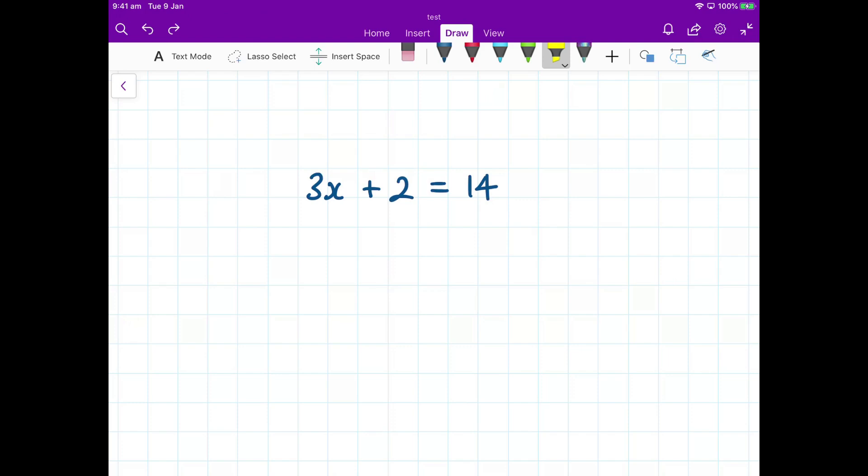In this video, we're going to look at how we solve an equation. When I say solve an equation, what I want to do is find the value of that letter x. So what number can I place in there that will make the left hand side equal to the right hand side? Now, with a little bit of thought, I can see that if I have the number 4, so 3 multiplied by 4, that's 12, add on the 2, that gives me 14. So the solution to this equation is that x must be equal to 4.